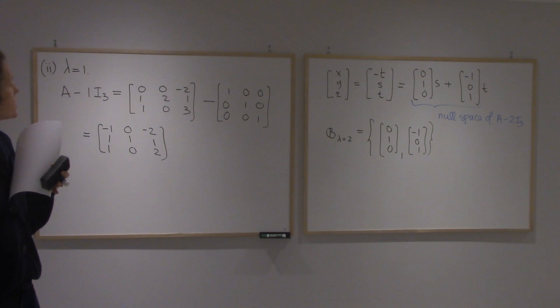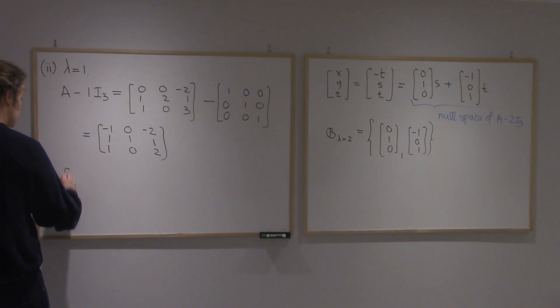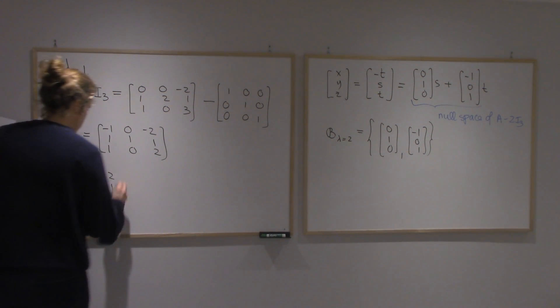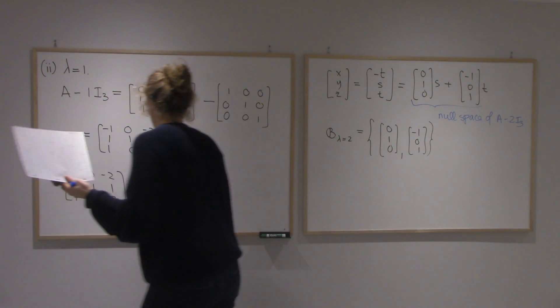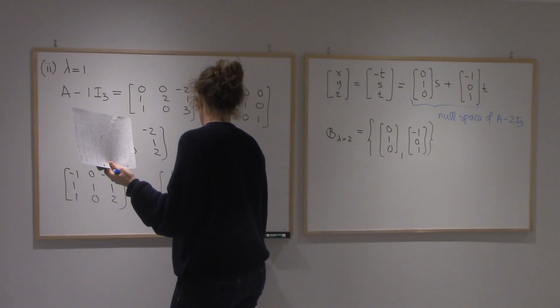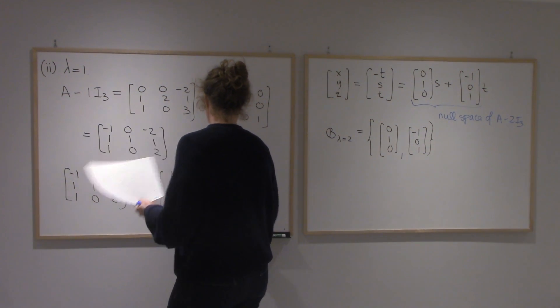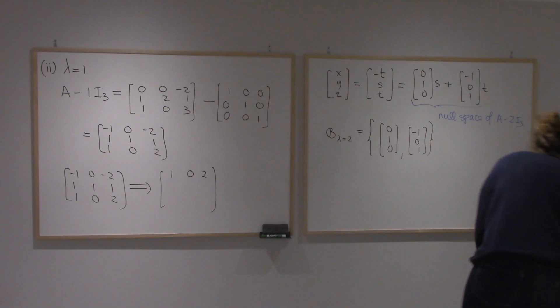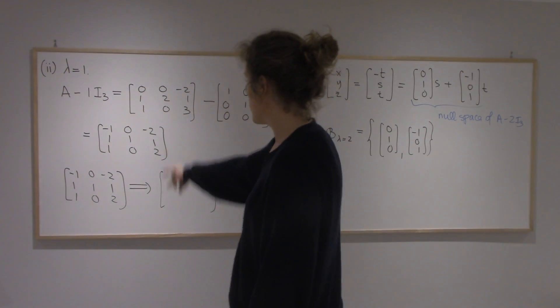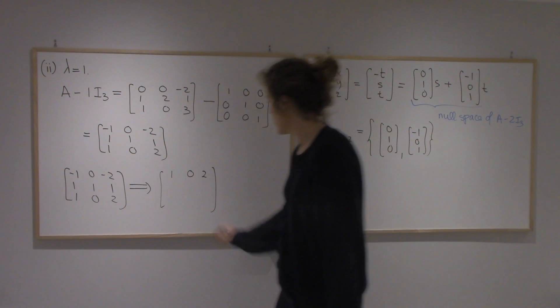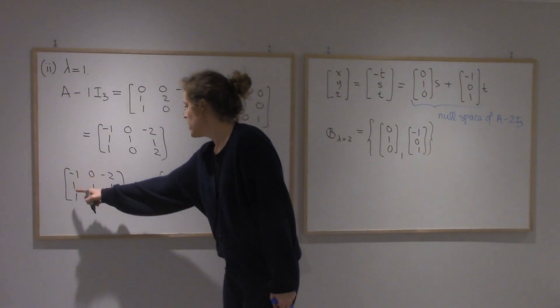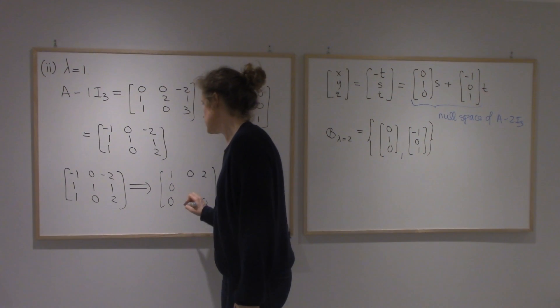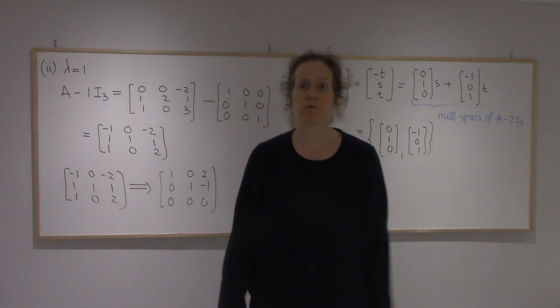Alright, so this matrix will give us the eigenspace once I reduce it. So allow me to reduce. Alright, so you can tell that the first and the third row are multiples of each other. So the third row is going to disappear. And then if I add these, I'll get 0, 1, minus 1. So here is the reduction.